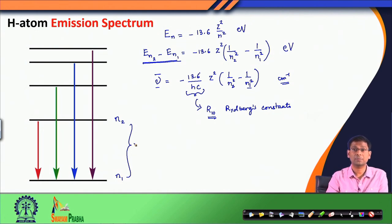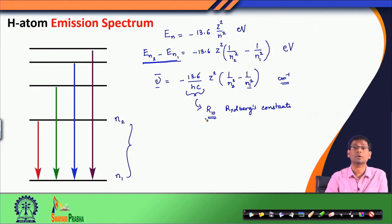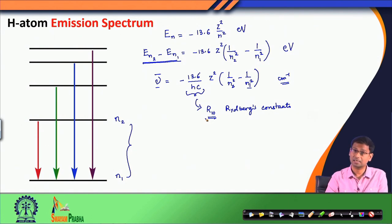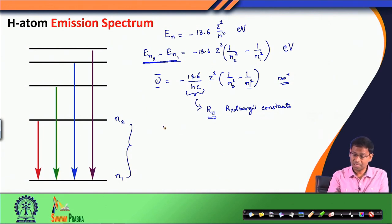Using this Rydberg constant, all the different series of hydrogen atom's emission spectrum can be described: with n₁ equals 1 and n₂ greater than 1 we get the Lyman series; n₁ equals 2 and n₂ greater than 2 gives the Balmer series; Paschen and so on. We are reproducing this Rydberg constant from the energy levels obtained from the quantum mechanical solution of the hydrogen atom problem. Both Bohr's atomic model and the quantum mechanical formulation agree here, but we will soon see how the quantum mechanical approach goes further than Bohr's model.